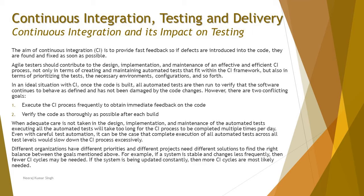In an ideal CI situation, once the code is built, all automated tests are run to verify that the software continues to behave as defined and has not been damaged by the code changes. The most important aspect is that when integrating into an existing module or codebase, the new integration should not impact existing functionality — this is validated through regression testing.